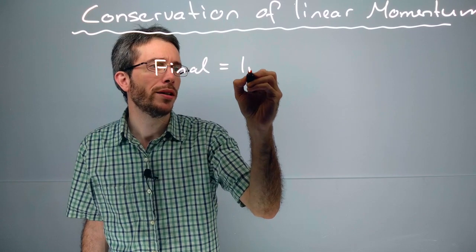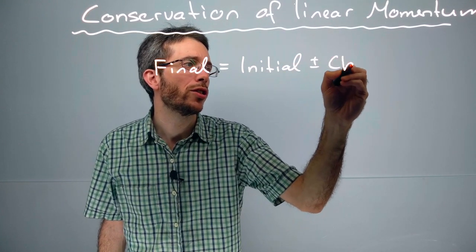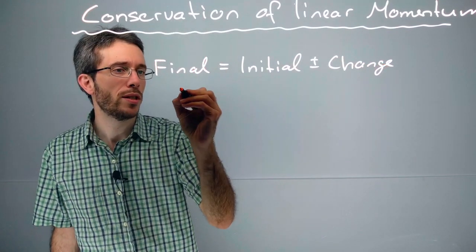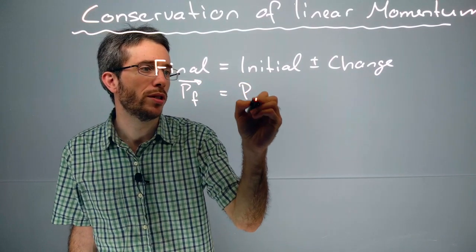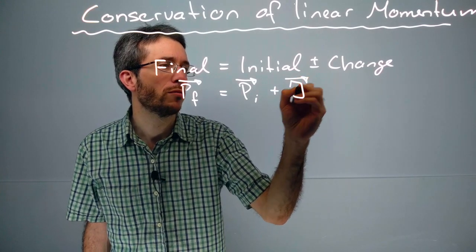This is what I had at the beginning, plus or minus the change. In the case of momentum, this means that my p-final vector is my p-initial vector plus the impulse, which is the change.